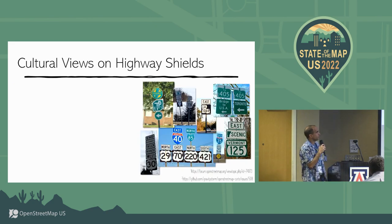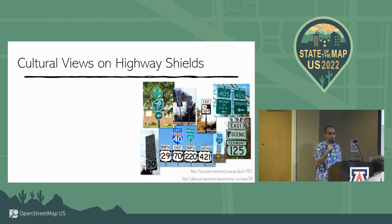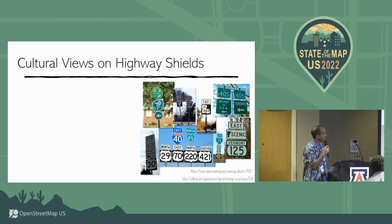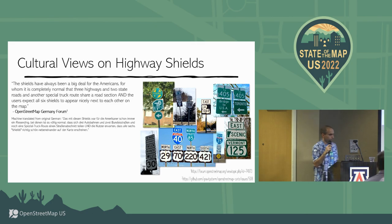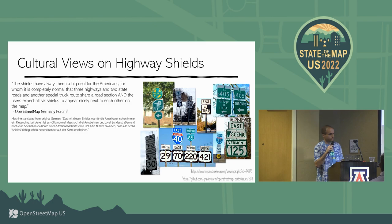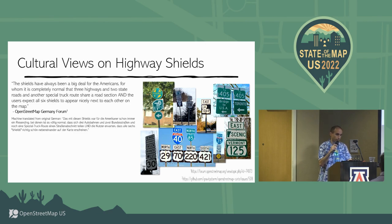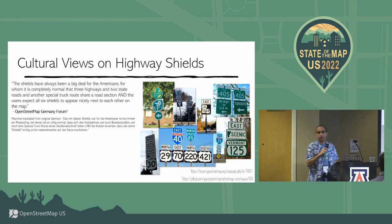Highway shields are probably the most recognizable aspect of our maps, and there are so many strange shields out there — I've even surprised myself as I've gone through this project. Here's a view from a foreign audience, translated from German, posted in the Germany forum: 'The shields have always been a big deal for the Americans, for whom it is completely normal that three highways, two state roads, and another special truck route share a road section, and users expect all six shields to appear nicely next to each other on the map.' We agree — they should.